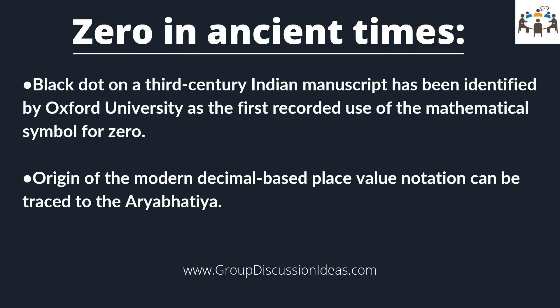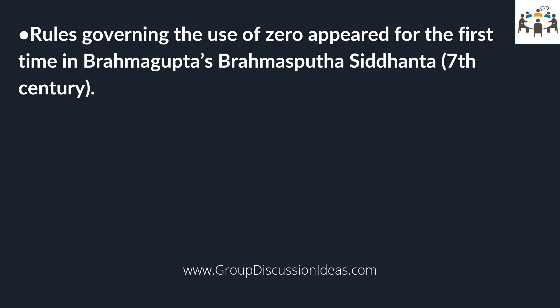Now let's see the importance of zero in ancient times. A black dot on a 3rd century Indian manuscript has been identified by Oxford University as the first recorded use of the mathematical symbol for zero, 500 years earlier than previously thought, according to an Agence France-Presse article. The origin of the modern decimal-based place value notation can be traced to Aryabhatta. The concept of zero as a digit in the decimal place value notation was developed in India, presumably as early as during the Gupta period, with carbon dating to the 5th century and oldest evidence dating to the 7th century. The rules governing the use of zero appeared for the first time in Brahmagupta's Brahmasphuta Siddhanta in the 7th century. Hence, the invention of zero has its roots in ancient times, and people have kept developing since then.